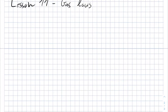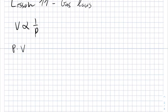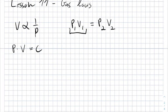So the first law is Boyle's law, also called the pressure-volume law. It states that the volume of a given amount of gas held at a constant temperature before and after varies inversely with the applied pressure when the temperature and mass are constant — basically saying that the volume is inversely proportional to the pressure. In another way, you can say that pressure times volume equals a constant, which means P1 times V1 equals P2 times V2, when temperature and moles are constant in both scenarios.